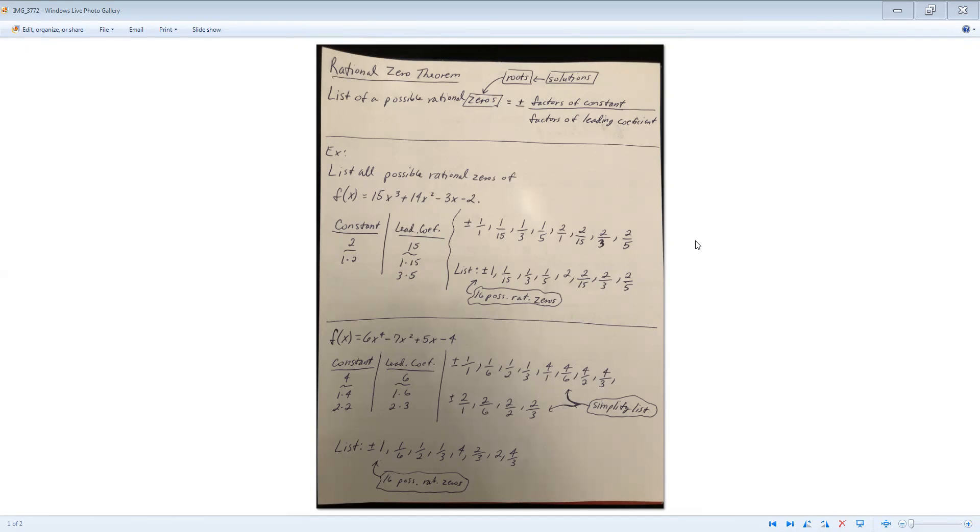So in order to figure out the list of possible rational zeros, in other words if I wanted to solve my equation, start from scratch, I don't have any hints or ideas as to what would be a solution or not, I can use the rational zero theorem, which will give me all of the possible rational solutions there are. So you do plus or minus, and then you take the factors of your constant and place them over each one of the factors of your leading coefficient.